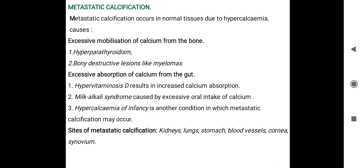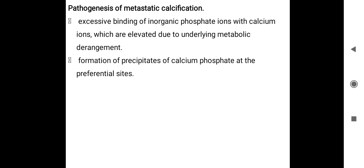Metastatic calcification affects the kidneys, lungs, stomach, blood vessels, cornea, and synovium — the synovial joints. Calcium deposits occur in these sites. The pathogenesis involves excessive binding of inorganic phosphate ions with calcium ions, which are elevated due to underlying metabolic derangements. The tissues cause precipitation of calcium phosphate at preferential sites, with crystals accumulating — this is metastatic calcification.